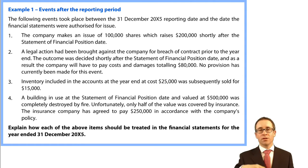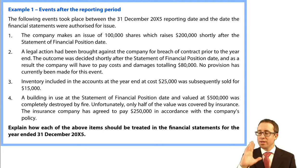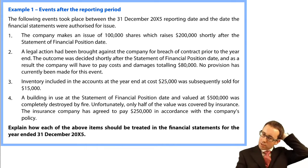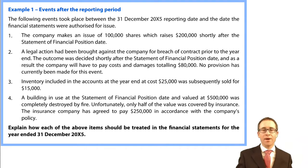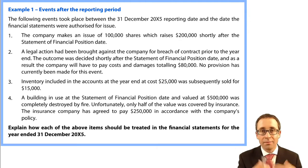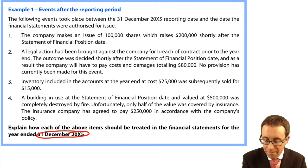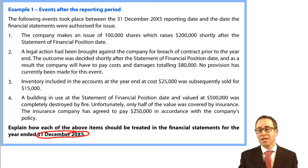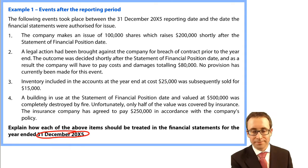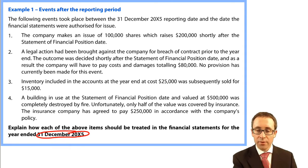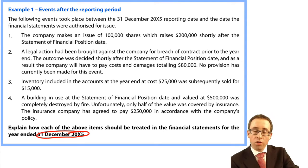If something appears in the exam that wasn't on your list, just think about whether or not the condition existed or did not exist at the end of the year. Let's go through and have a look at the example — it may throw in an extra one to add to the list. The question says: explain how each of the following items should be treated in the financial statements for December X5 — essentially, is it an adjusting or non-adjusting event? The following events took place between the December X5 reporting date and the date the financial statements were authorised for issue.